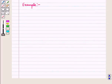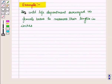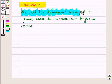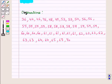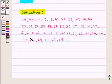Now let us discuss an example. The wildlife department surveyed 44 female bears to measure their lengths in inches, and the following observations were recorded. Now let us make a dot plot for this data.